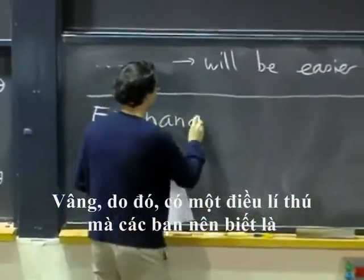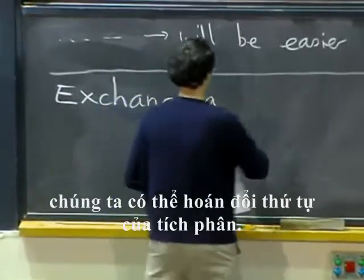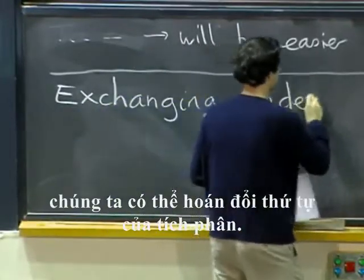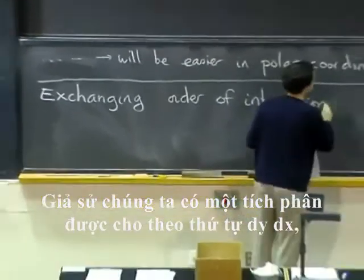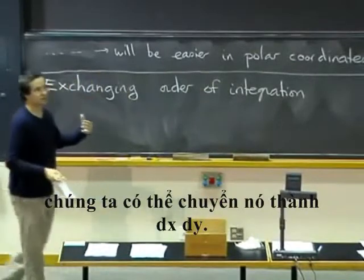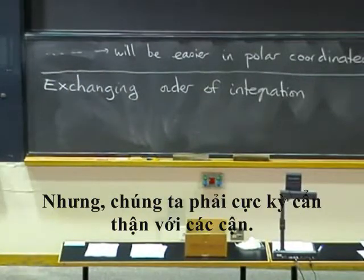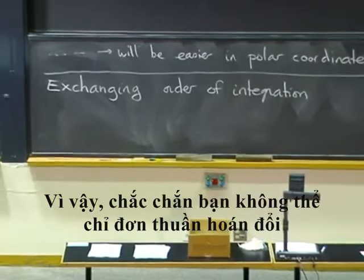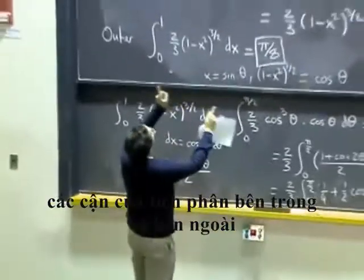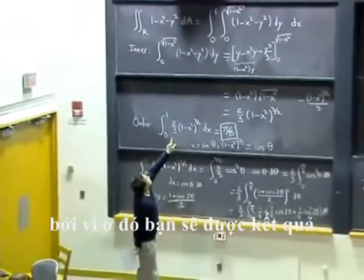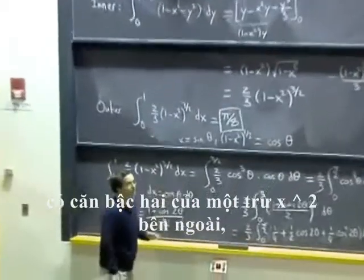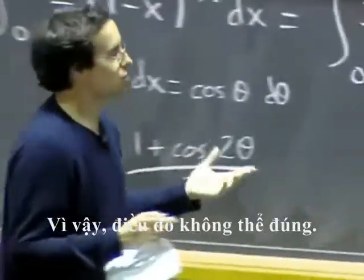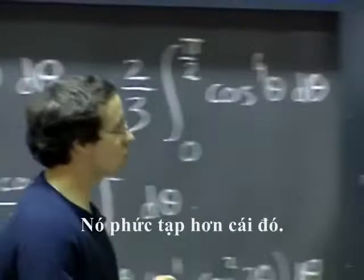So one thing that is kind of interesting to know is we can exchange the order of integration. So if we have an integral given to us in the order dy dx, we can switch it to dx dy. But we have to be extremely careful with the bounds. You certainly cannot just swap the bounds of the inner and the outer because you would end up having this square root of one minus x squared on the outside, and you would never get a number out of that. So that cannot work. It is more complicated than that.